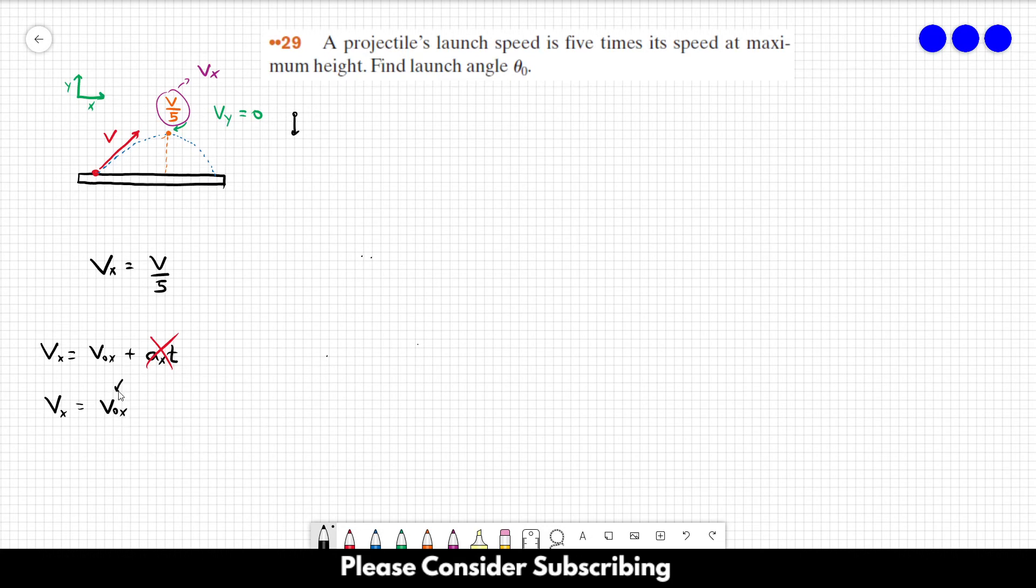And we can find this value over here by decomposing, taking the components of the initial speed. So this is VOX and this is VOY.